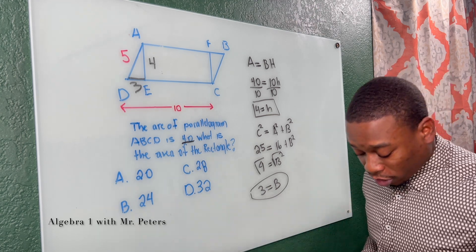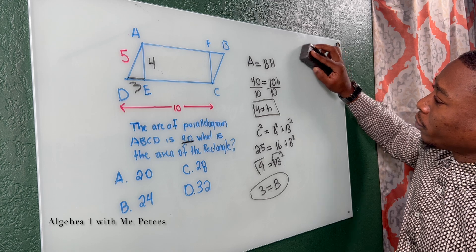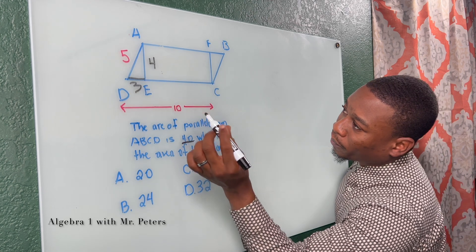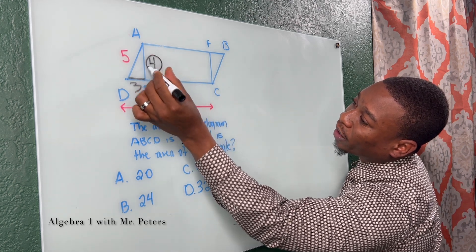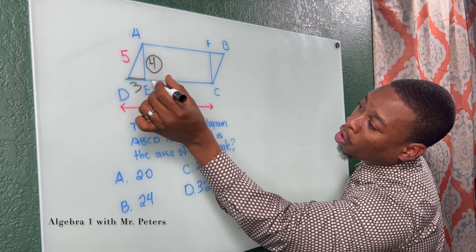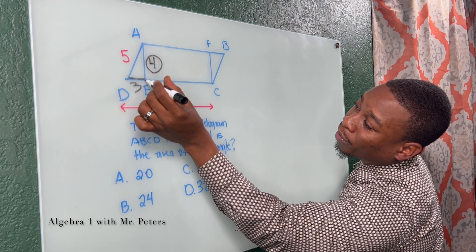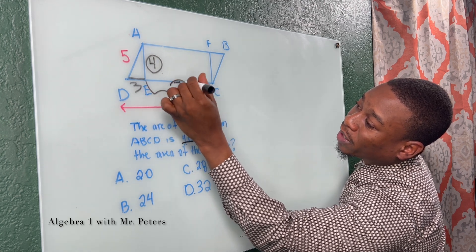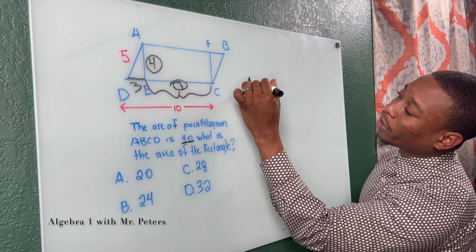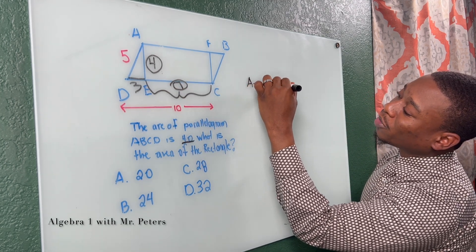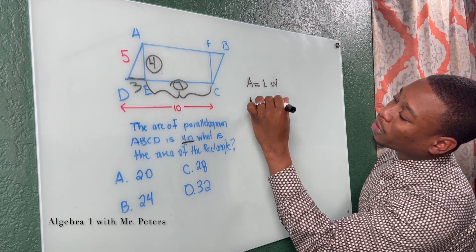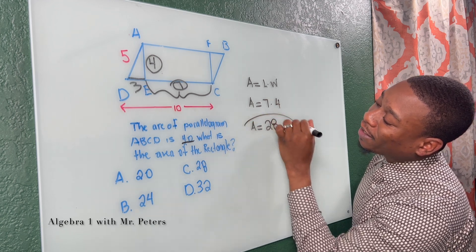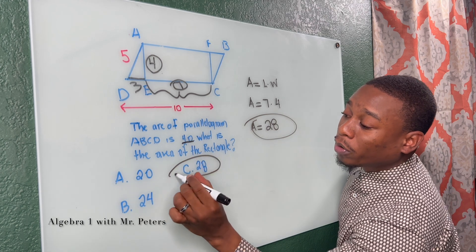Now that we've done that, the height for the rectangle is 4, and the length from 0 to the other side is 7. So when we find the area — length times width — the area is equal to 7 times 4, which gives us 28. That is how we find this answer.